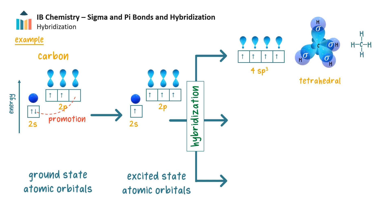In methane, carbon is sp3 hybridized. There are four electron domains around the carbon atom. Its four equivalent hybrid valence orbitals can form sigma bonds with four hydrogen atoms, and they repel each other equally, forming a tetrahedral shape.